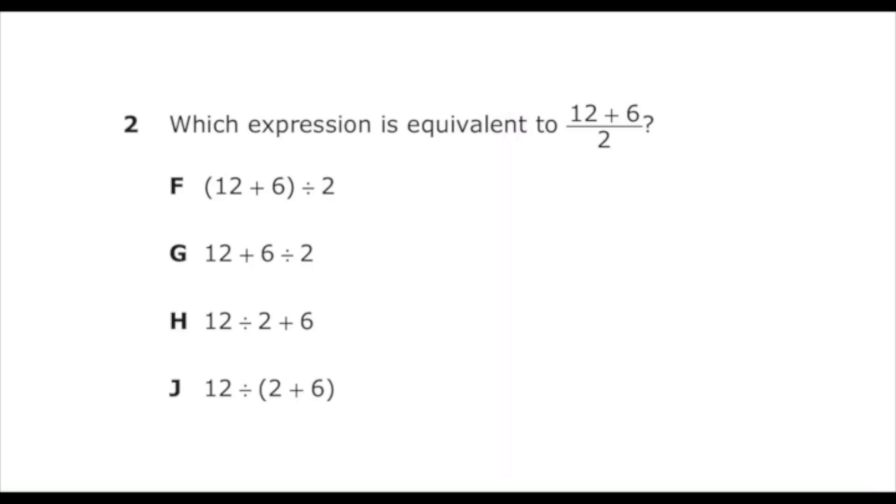Number two from the 2022 sixth grade math STAR test says which expression is equivalent to 12 plus 6 all divided by 2. In order to work this problem, I have to know that the two numbers in the numerator have to be added before I divide by 2. So if I add 12 and 6, I'm going to get 18, and then if I divide that by 2, I'm going to get 9.